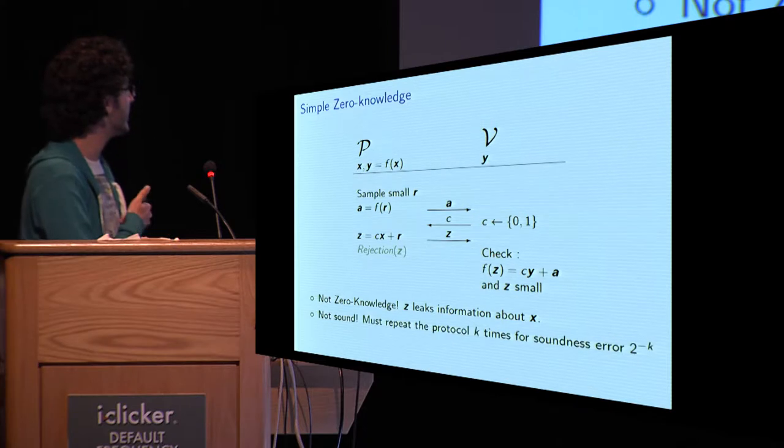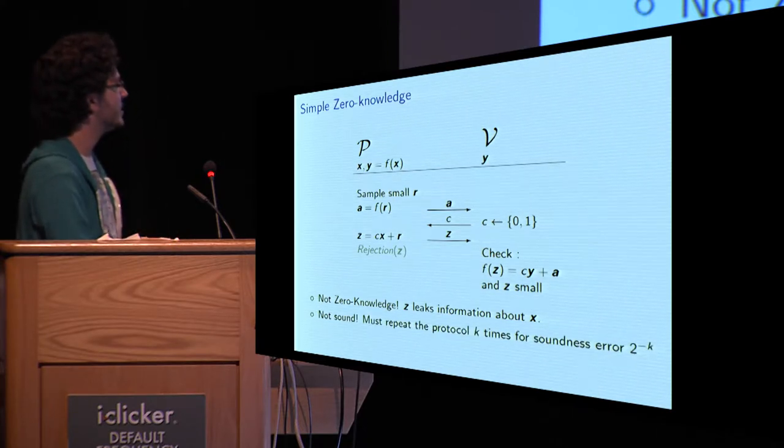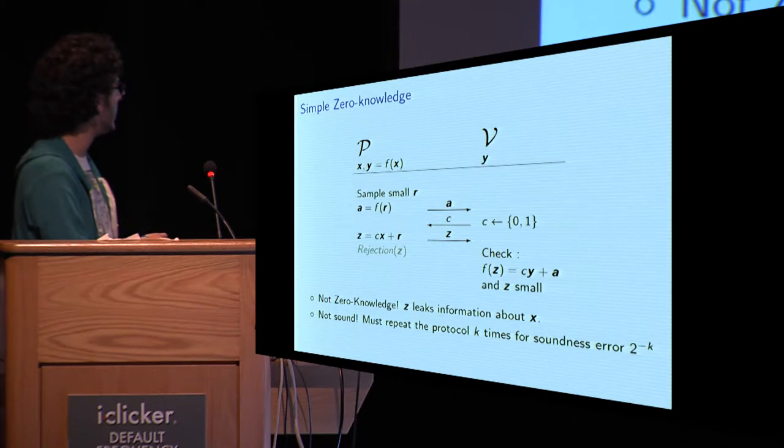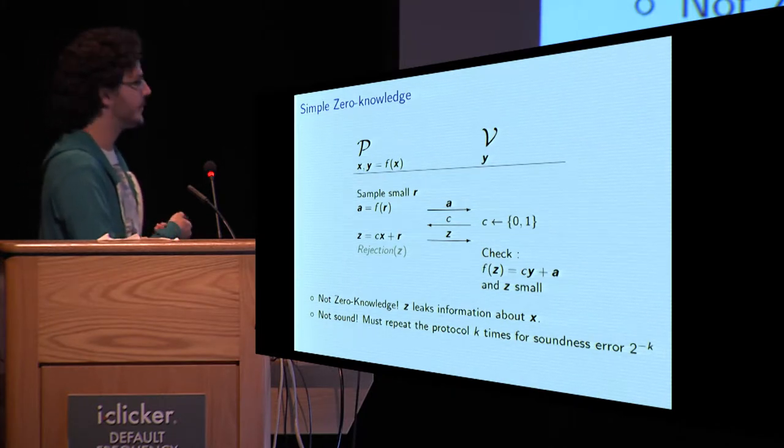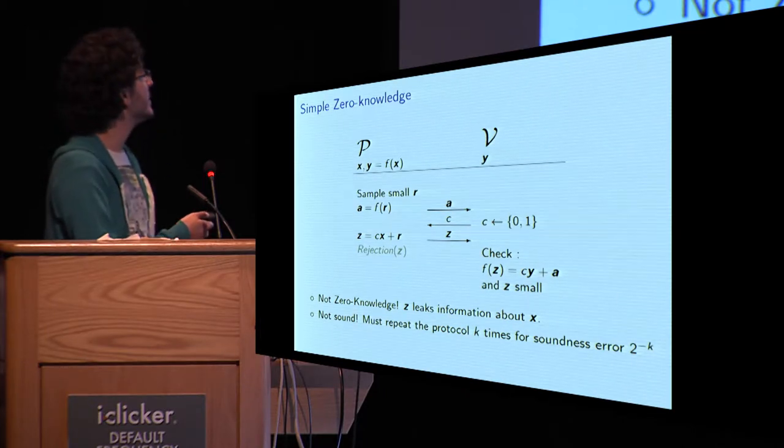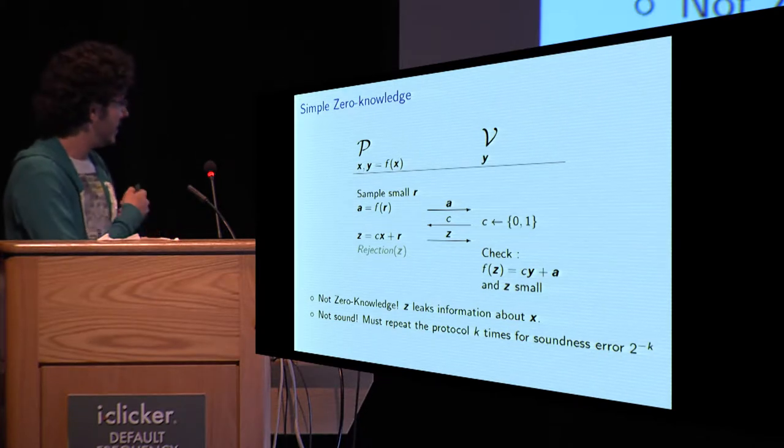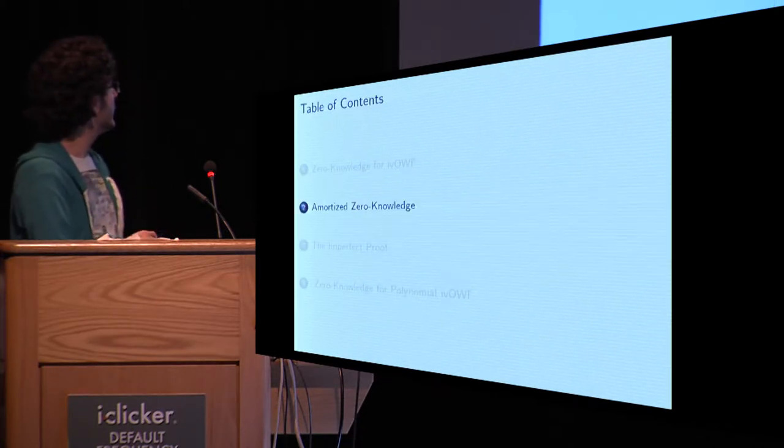Another problem is that this is not really sound either, because the prover can just guess the challenge, since the challenge is in 0-1, and cheat if his guess is right. So to achieve k bits of soundness, this protocol will have to be repeated k times. That's not really good.